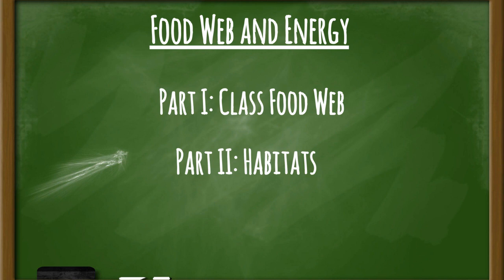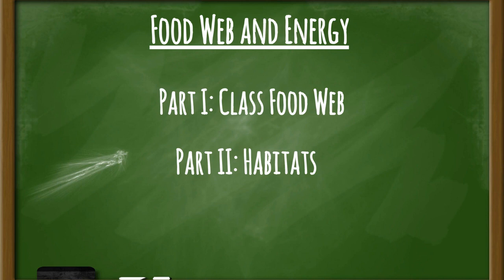Part 2 is called Habitats. You will look at your habitat card with your assigned group, then brainstorm the different organisms that live in your assigned habitat. Record your ideas by writing the organisms under the correct categories in your student journal. Then draw a simple food chain of organisms found in your specific habitat, beginning with the sun, and explain how it relates to a larger food web. Be sure to include the main source of energy in your chain.